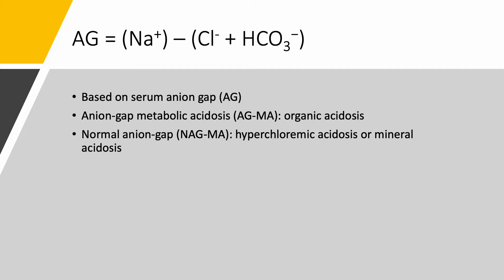The anion gap is when you take sodium and subtract chloride plus bicarb. Based on serum anion gap, we have two big categories of metabolic acidosis: either anion gap metabolic acidosis, also known as organic acidosis, or non-anion gap metabolic acidosis, also called hyperchloremic acidosis because chloride is high, or mineral acidosis.